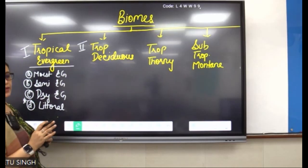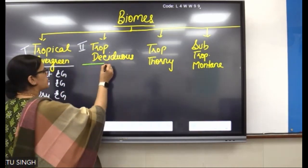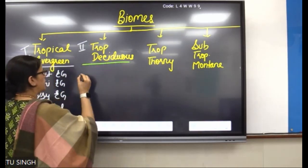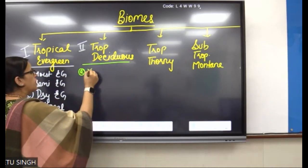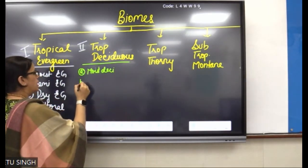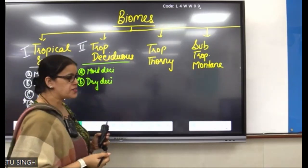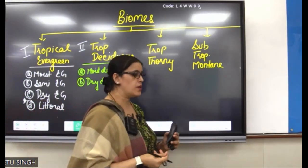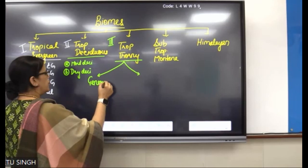Tropical Deciduous has two prominent varieties: Moist Deciduous and Dry Deciduous.